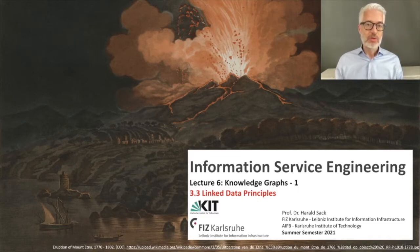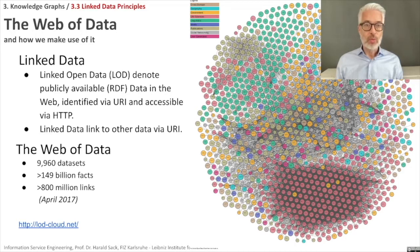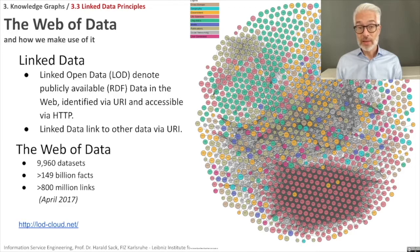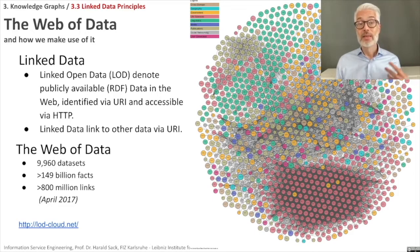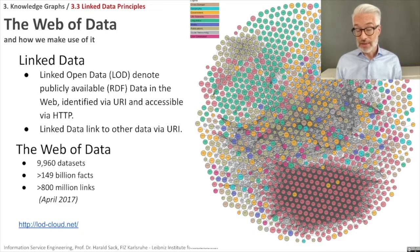In this section of the lecture we will talk about linked data and the linked data principles. In the previous section you heard about the web of data, which makes use of linked data. All of these data sets that constitute the web of data are interlinked, following the linked data principles. If they are freely publicly available, they are also linked open data, LOD. Linked open data is publicly available data structured via RDF — the Resource Description Framework. All of the data can be identified via URI and is accessible via HTTP, providing a standard interface. The linked data principles define this standardized interface.